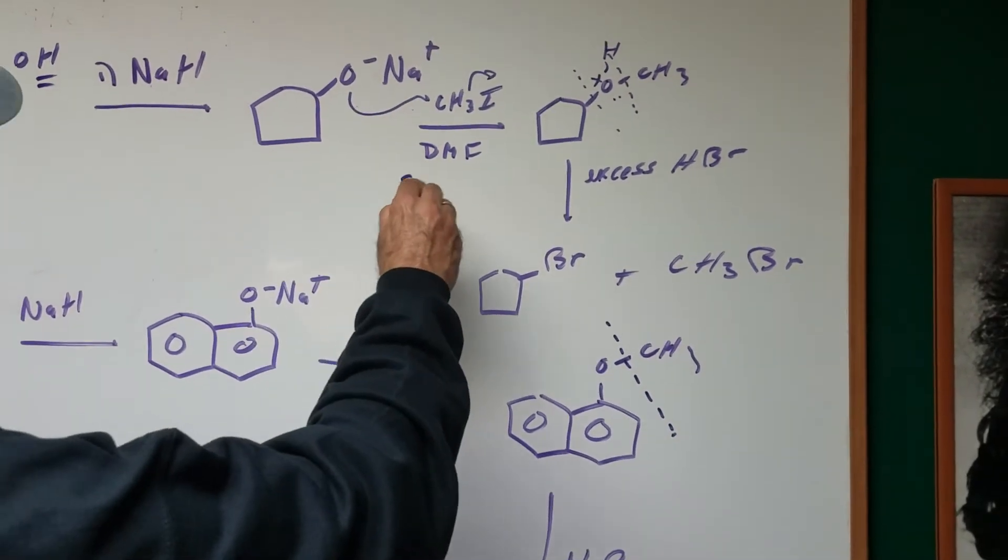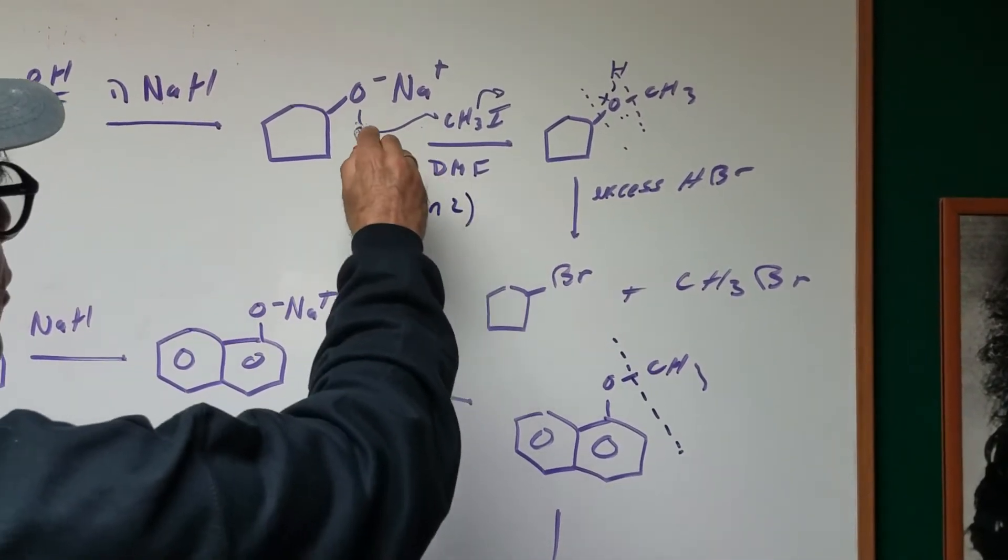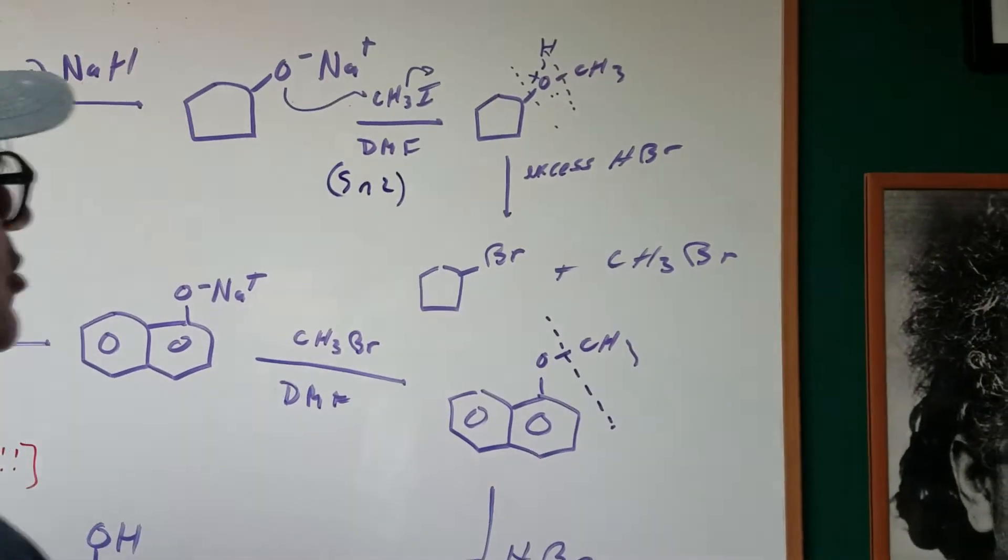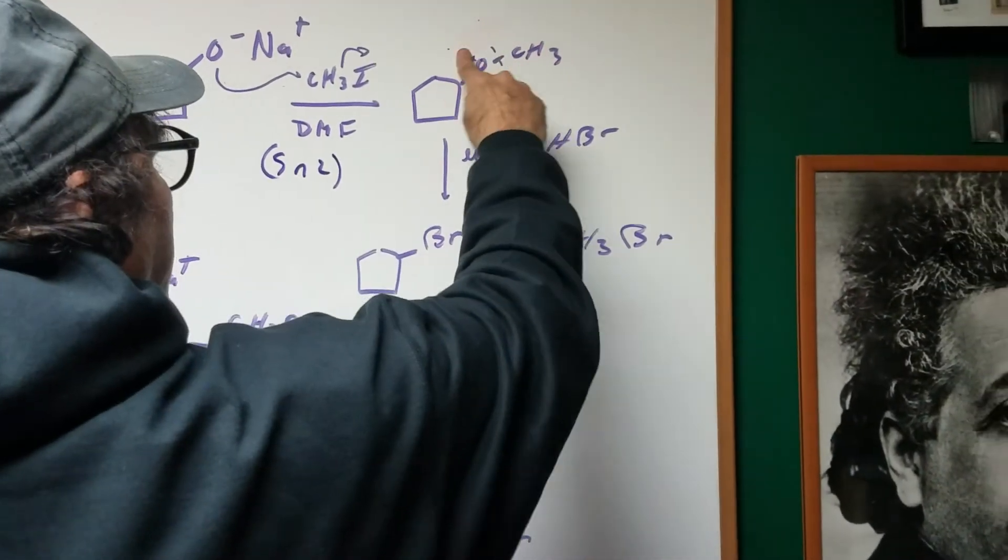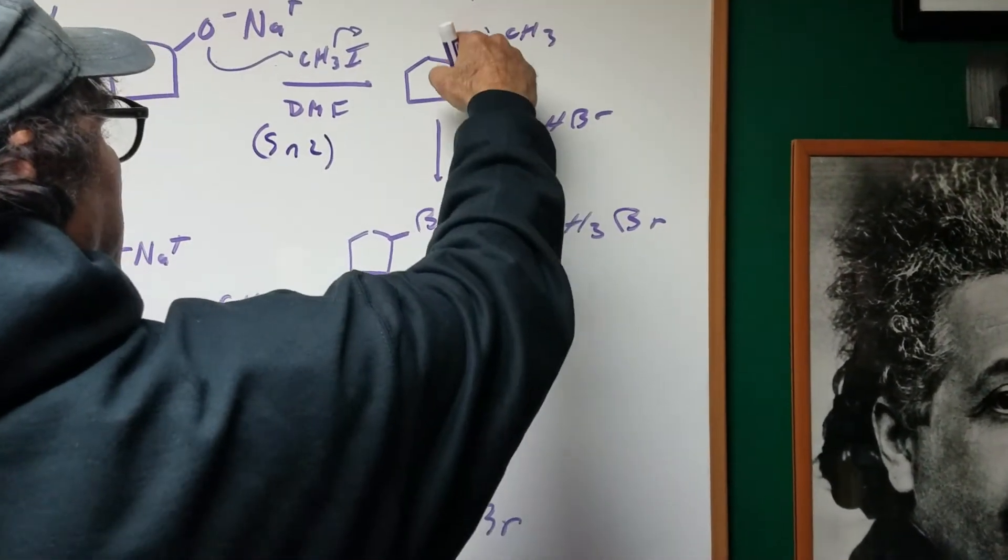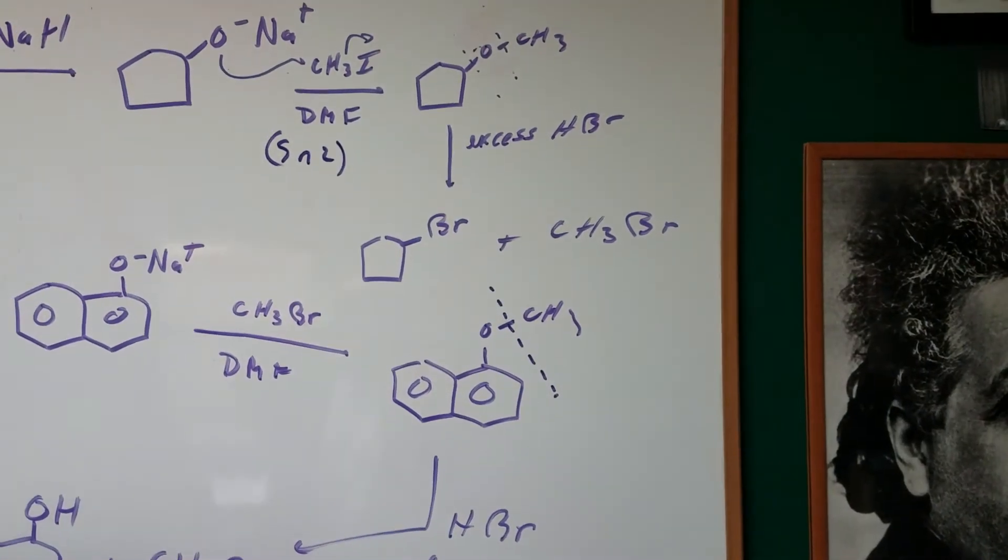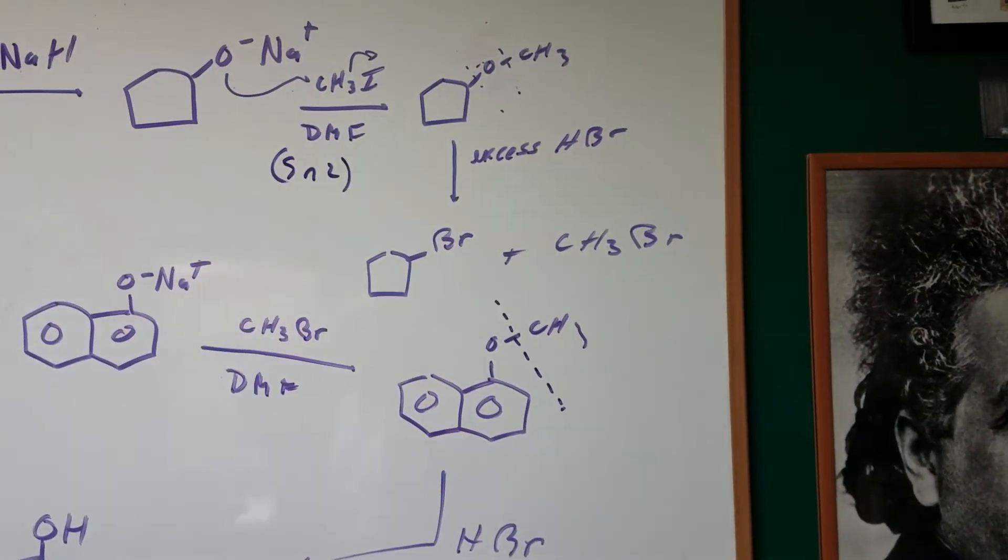Then we do a simple SN2 and there's the attack, and as you guys can see from here what I first do is I get the ether. That's known as a Williamson ether synthesis.